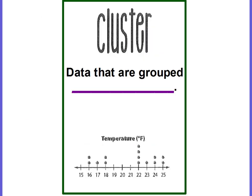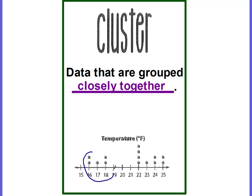The first is to talk about clusters. Clusters are data that are grouped closely together. If you look at this dot plot of temperatures, you can see where each dot represents a piece of data. The data is clustered between 16 and 18, and there's also a cluster between 22 and 25 degrees. These are data that are close together — they're called clusters.